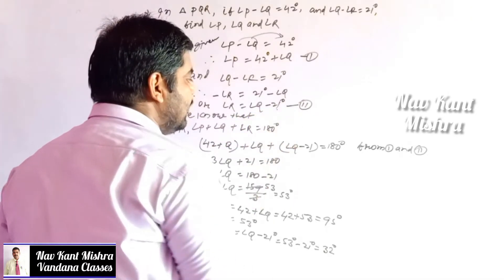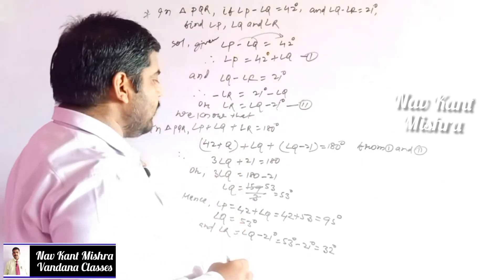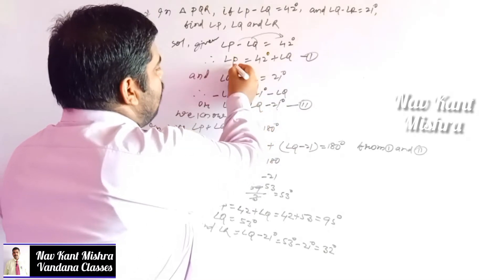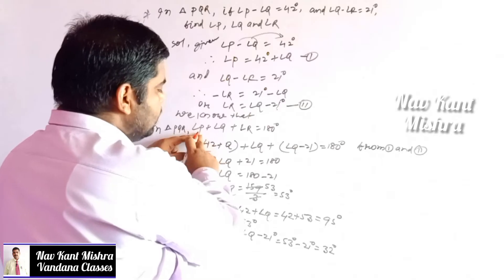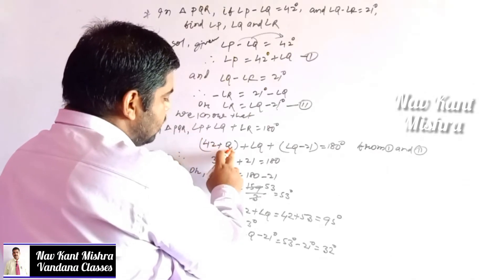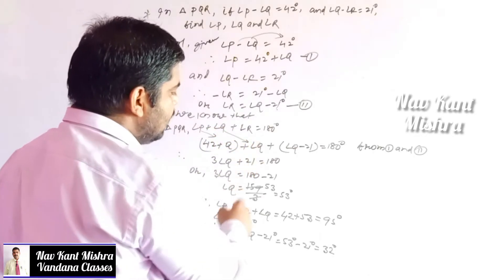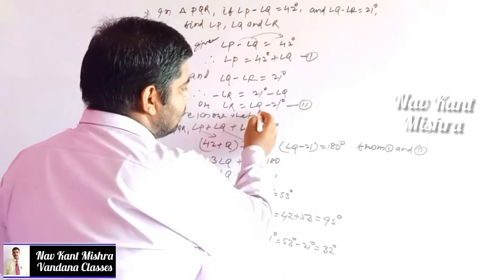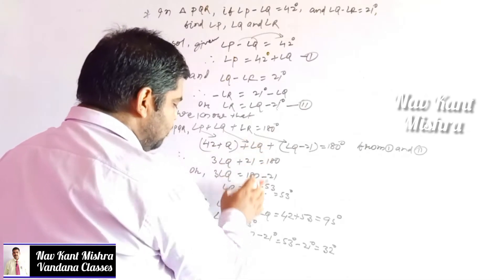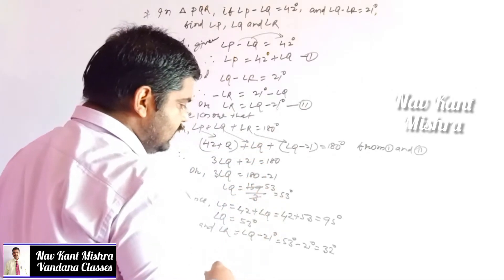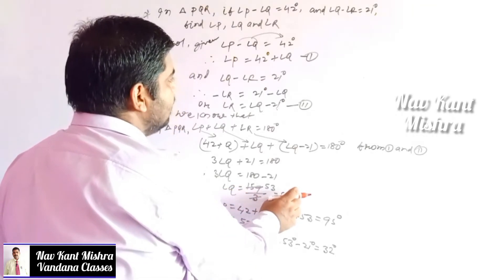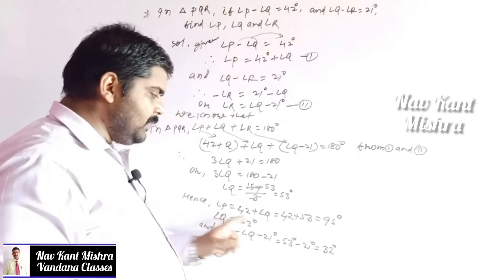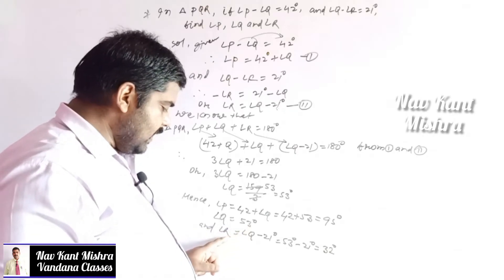Using the angle sum property, angle P + angle Q + angle R = 180°. Substituting from equations 1 and 2: (42 + angle Q) + angle Q + (angle Q − 21) = 180°. After simplification, angle Q = 53°. Putting this back, angle P = 95°, angle Q = 53°, and angle R = 32°.